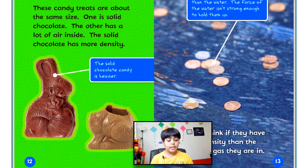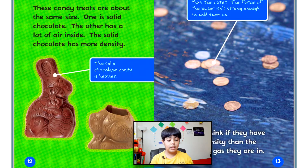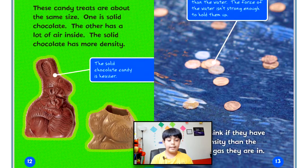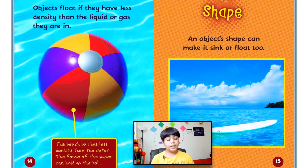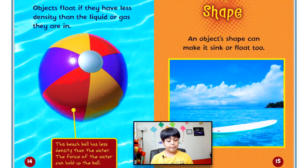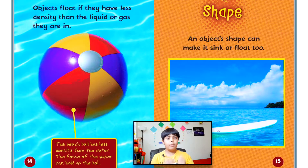These coins have more density than the water. The force of the water isn't strong enough to hold them up. Objects sink if they have more density than the liquid or gas they are in. Objects float if they have less density than the liquid or gas they are in. This beach ball, for example, has less density than the water, so the force of the water can hold up the ball.